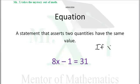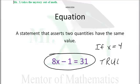Now if x equals 4, then this equation is true. But if x is not equal to 4, then this statement will be false.